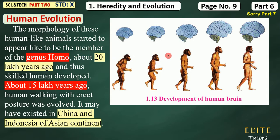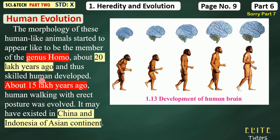About 20 lakh years ago, the genus Homo started. Thus skilled human developed, because in his brain development started — art, tools, and many things. About 15 lakh years ago, human walking with erect posture — Homo erectus — evolved, and it may have existed in China and Indonesia of the Asian continent.